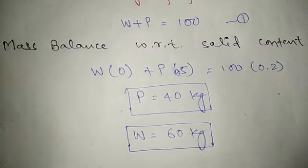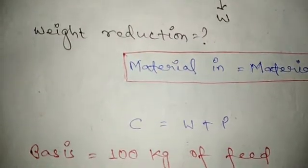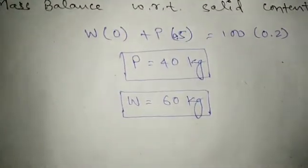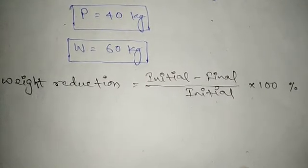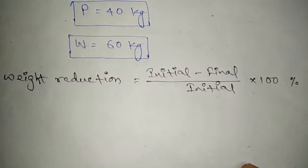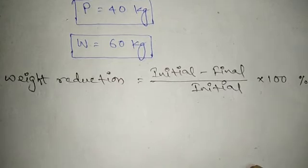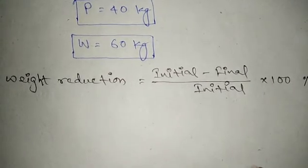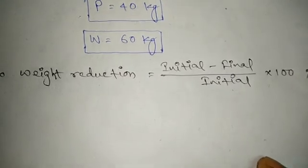Adding W and P: 60 + 40 = 100 kilograms, which matches the reactant, confirming the answer is correct. Now we find the weight reduction using the formula: weight reduction = (initial weight − final weight) / initial weight × 100. The initial weight is 100 kg and the final weight is 40 kg, giving us the percentage of weight reduction.